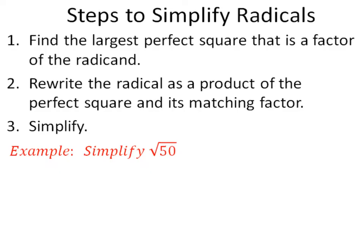Now, in order to simplify a radical, you must first find the largest perfect square that is a factor of the radicand. Then you're going to rewrite the radical as a product of the perfect square and its matching factor, and finally simplify. Our first example asks us to simplify the square root of 50.